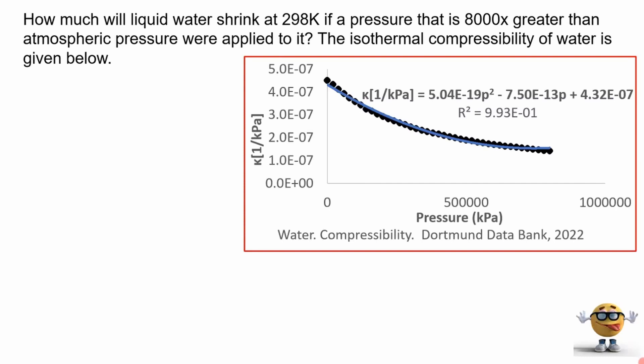Already gang, in this thermodynamics problem, we're going to use the isothermal compressibility to determine how much a liquid will shrink in terms of its volume. And this is the problem right here. And I must admit, I'm pretty amped up about this problem because it uses real data. The link to this data is in the description to solve this problem here.